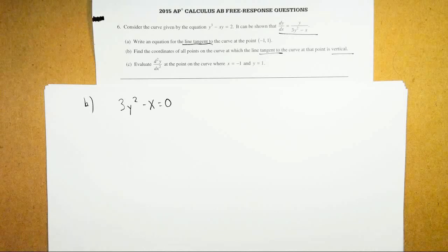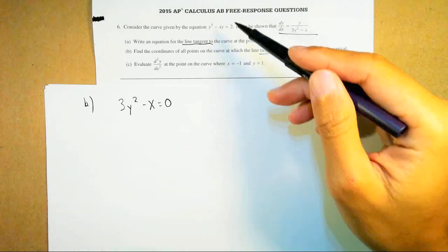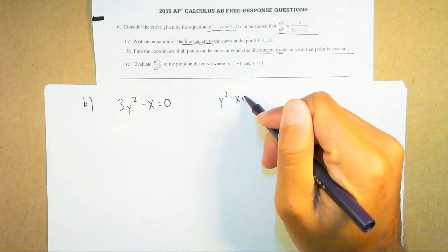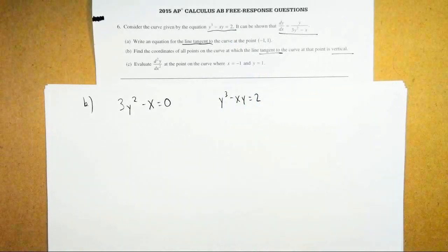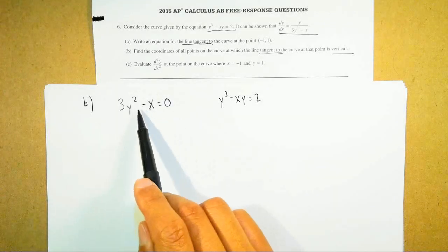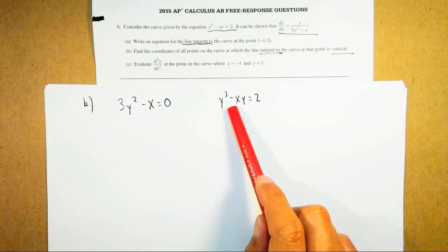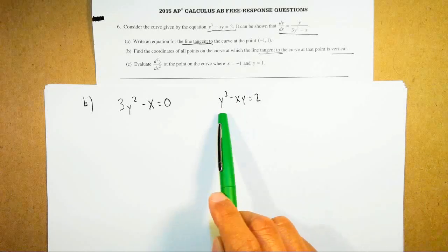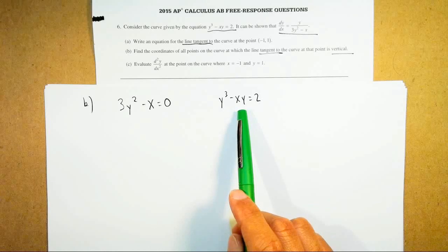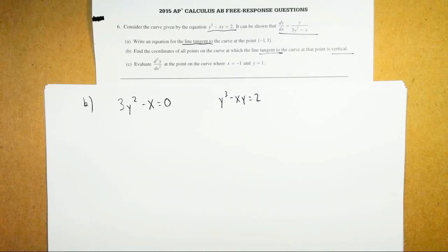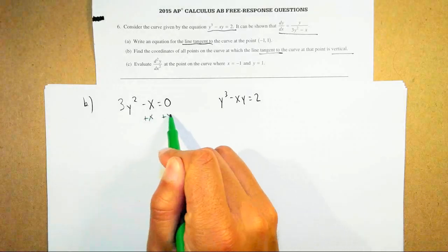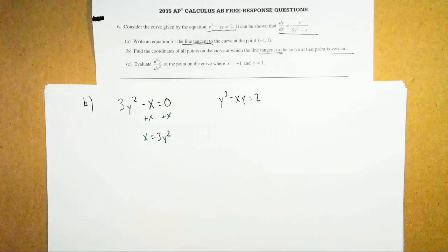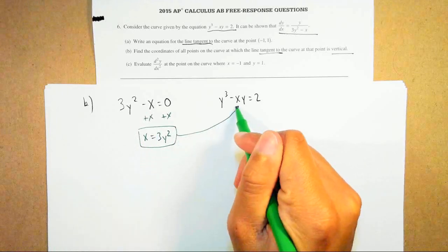Now let's go ahead and find the coordinate. I have y squared and x — what am I going to do? This is where we look at the other equation they gave us: y cubed minus xy equals 2. How can I use these two equations together? If I solve for a variable in the denominator equation and plug into the curve equation, I can solve it. Since x equals 3y squared is easy to isolate, I add x to both sides and get x equals 3y squared. Anytime I see x, I plug in 3y squared.